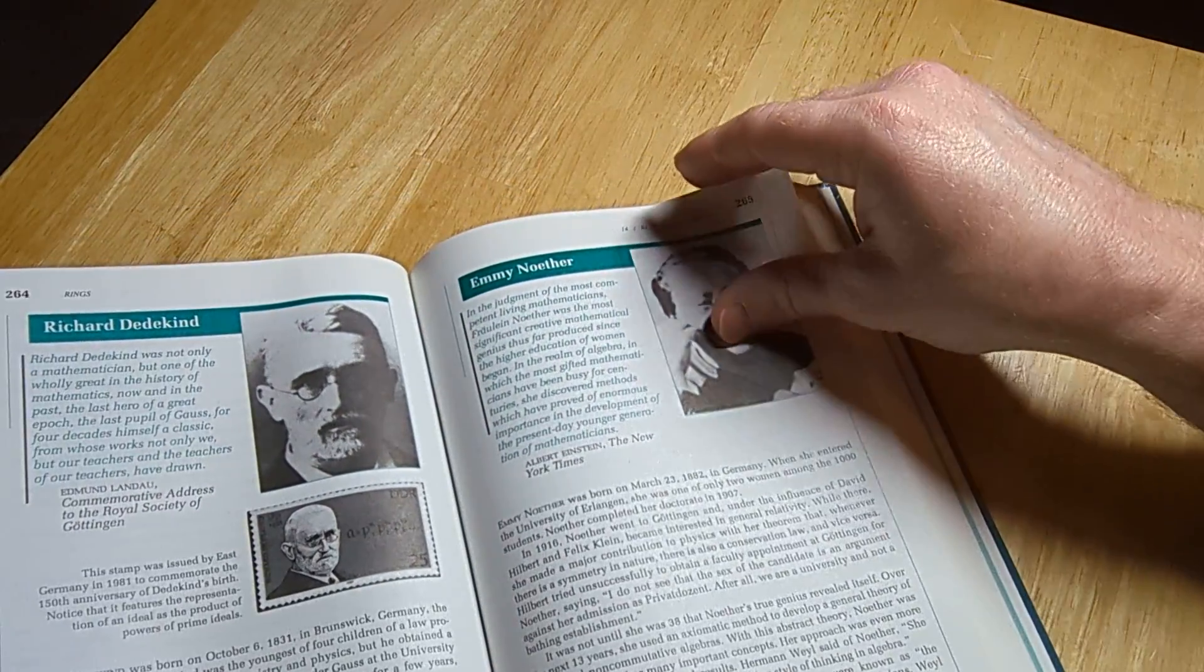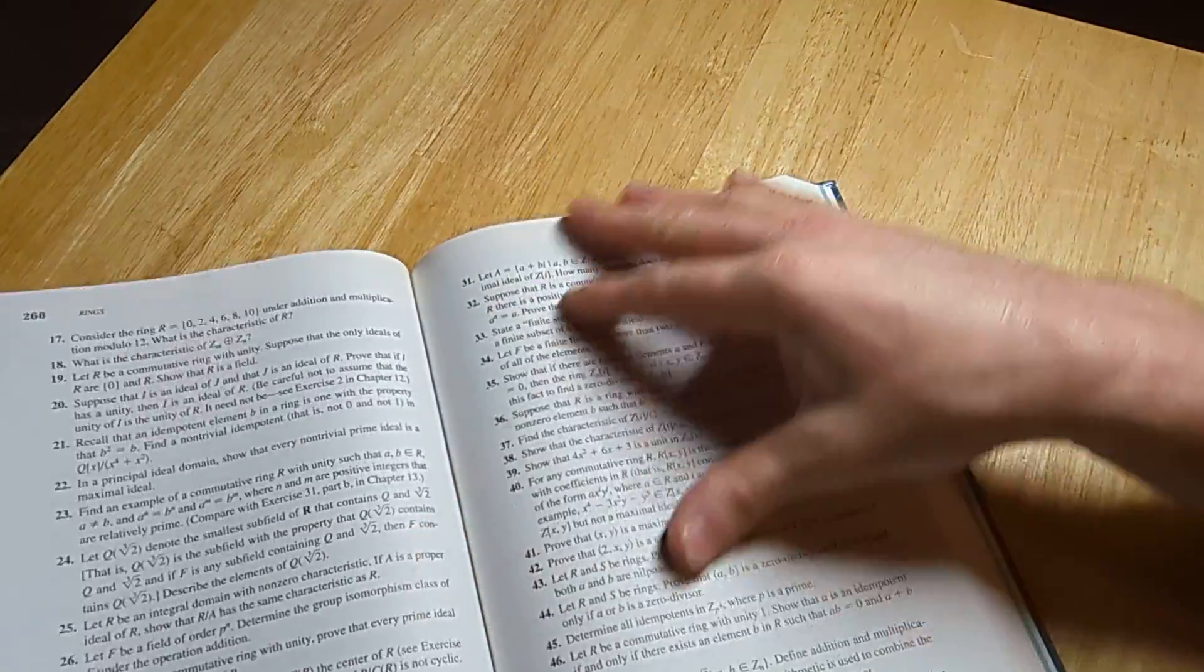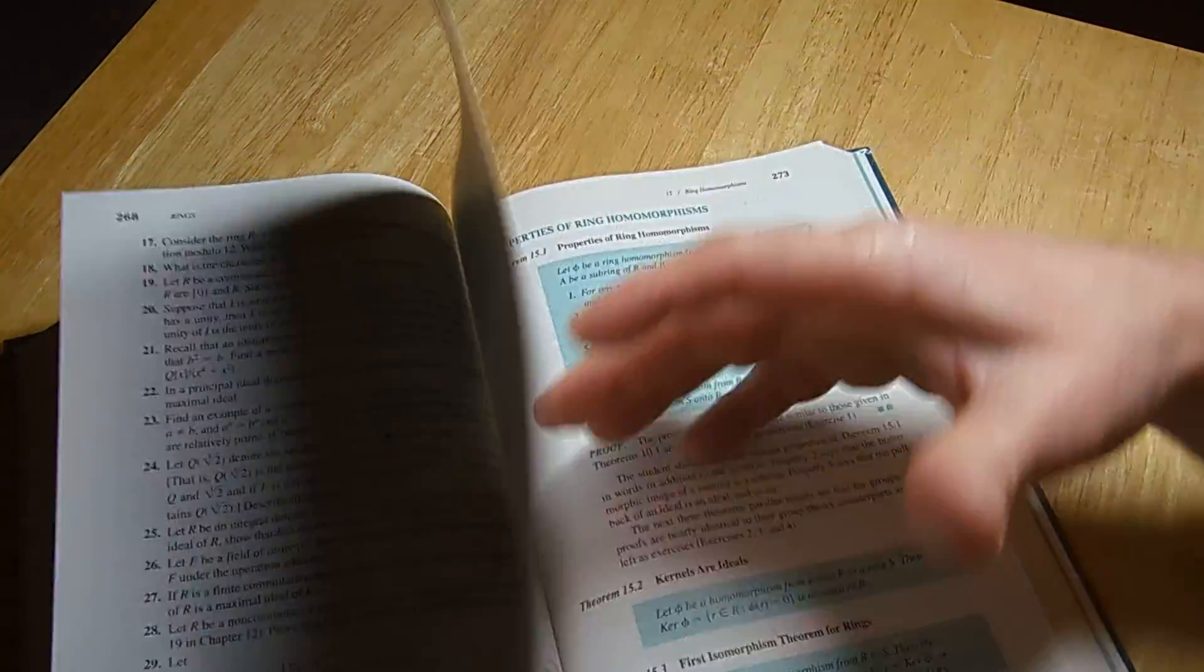Oh, Dedekind and Emmy Noether and Noetherian rings. They're named after her. Look at all these exercises. Tons of exercises.